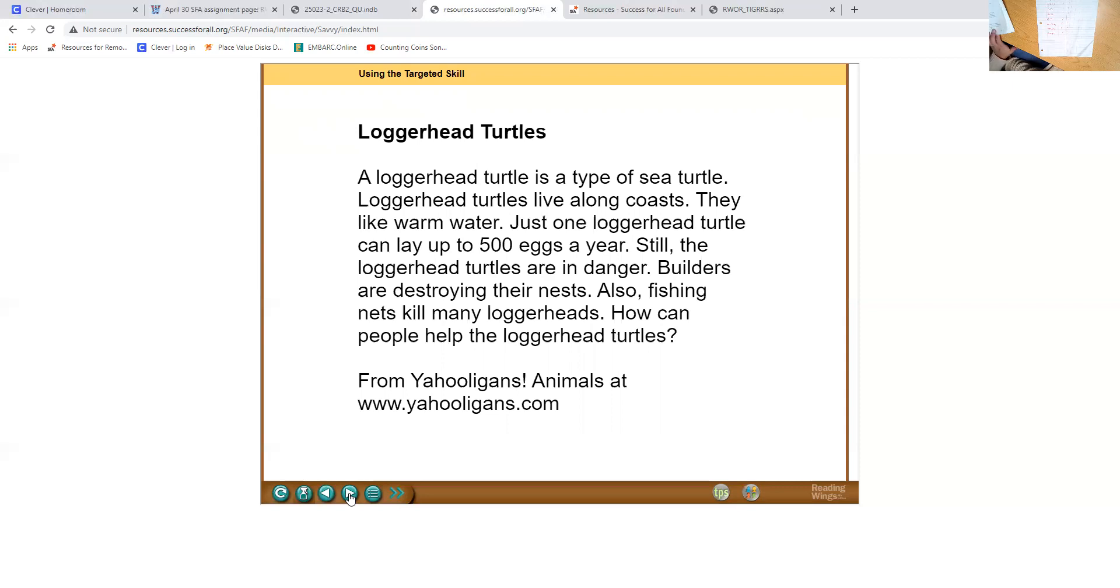I'm going to say two sentences that are very similar and I want you to tell me what's different about them. Here's the first. Monique lives on Elm Street. Now here's the second. Where does Monique live? How are they different? Right. The second sentence is a question. I would expect someone to answer me after I asked that question. What word helps you know that this sentence is a question? I said, where does Monique live? Where is a question word.